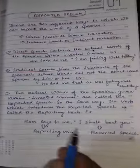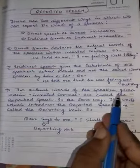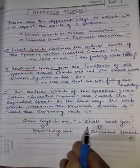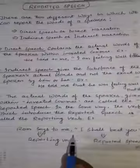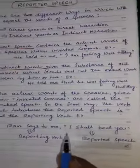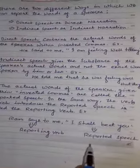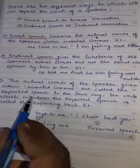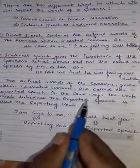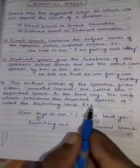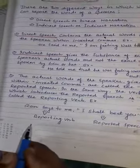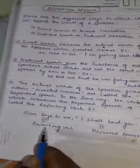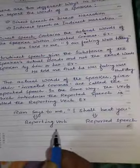After that, you must know about the reporting verb and Reported Speech. The actual words of the speaker are given within inverted commas — they are called Reported Speech. Here, 'Ram says to me, I shall beat you.' The phrase 'I shall beat you' is in inverted commas, so it is the Reported Speech. The verb which introduces the Reported Speech is called the Reporting Verb — here, 'Ram says to me' is the reporting verb.